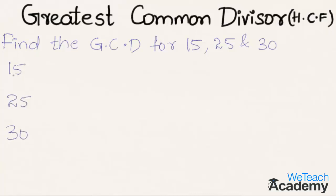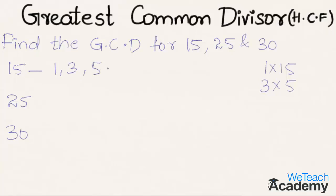Let us consider the factors for 15. Here 15 can be written as 1 into 15, and it can also be written as 3 into 5. So all these are the factors of 15: 1, 3, 5, and 15.